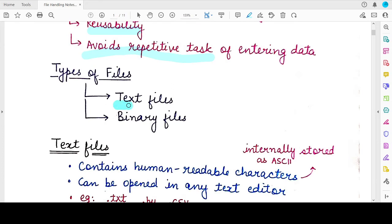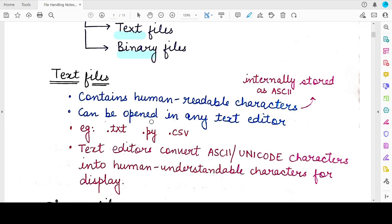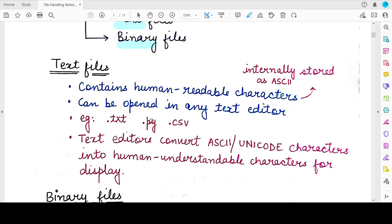Now there are two major types of files that you can use. The first is the text file and the second is the binary file. So let's understand the difference between the two and what each of these files mean.